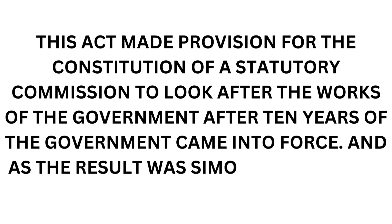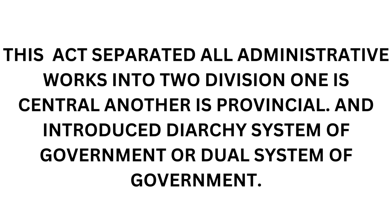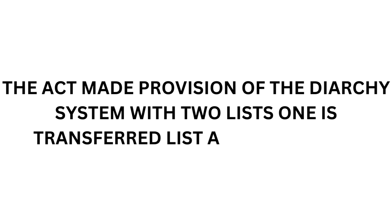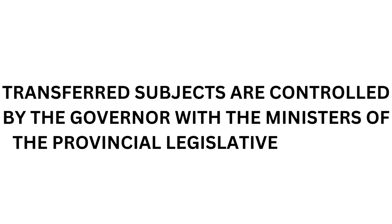This Act introduced a dual system of government — that is, the dyarchy system of government — at central and provincial levels. Two subjects were divided on the basis of administrative works: the reserved list, where the British Governor and the Executive Council were responsible, and the transferred list, which was controlled under the Governor and the Indian Ministries of the Legislative Council.